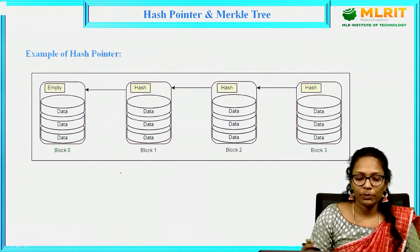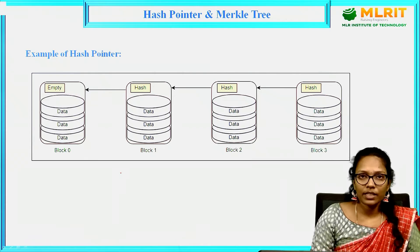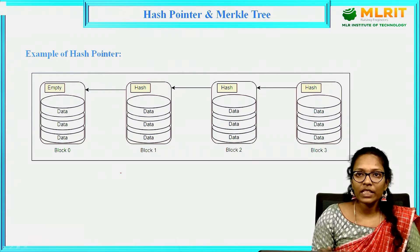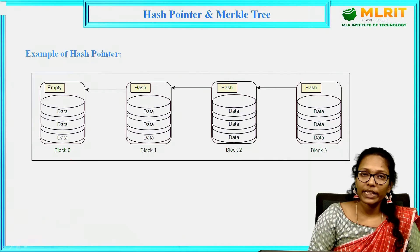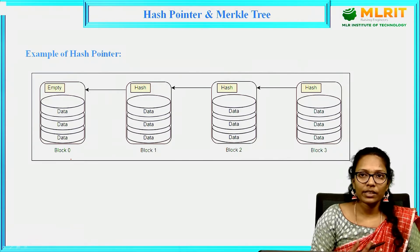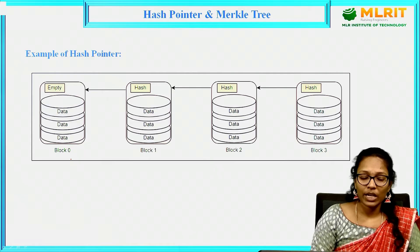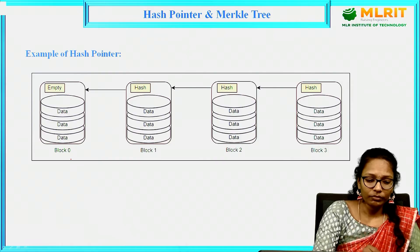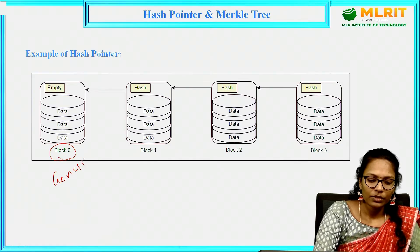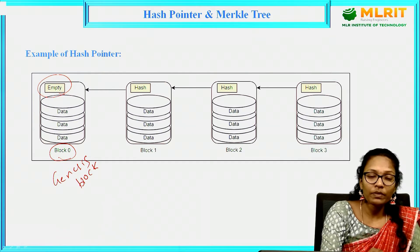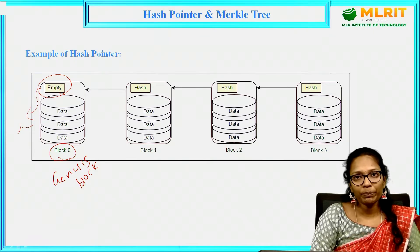Coming to the example of Hash Pointer — here we can see a simple blockchain which contains four blocks. In each block, it will contain different things like timestamp, Merkle root, transaction data, and everything. Along with that, we also have a hash pointer. This is block 0, which is also called the Genesis Block, and if you observe here, the hash pointer is empty because we do not have any previous block.